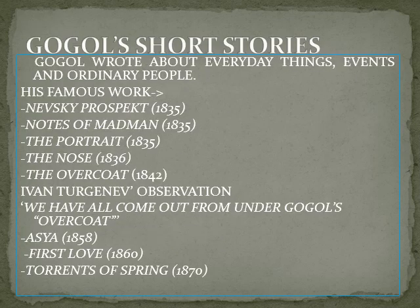The second important writer in Russia is Gogol. Gogol wrote about everyday things, events, and ordinary people. His famous works are Nevsky Prospect, 1835; Notes of a Madman, 1835; Portrait, 1835; The Nose, 1836; and The Overcoat, 1846. Ivan Turgenev very precisely observed about Gogol: 'We have all come out from under Gogol's Overcoat.' This is a very famous and important quote showing the importance of Gogol in Russia.